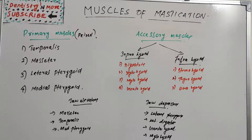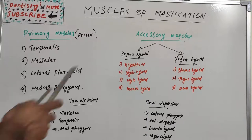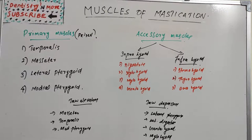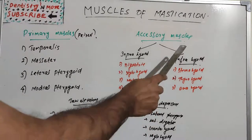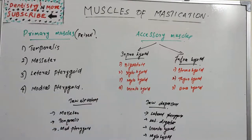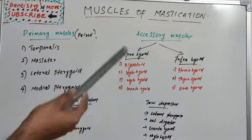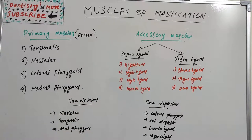We have four pairs of muscles in the mandible which make chewing movement possible. These muscles, along with accessory muscles, are together known as muscles of mastication. These muscles also have roles in prosthetic dentistry, defining the borders and peripheral extensions of dentures. The primary muscles are temporalis, masseter, lateral pterygoid, and medial pterygoid. The accessory muscles are divided into suprahyoid muscles — above the hyoid bone — and infrahyoid muscles — below the hyoid bone. The suprahyoid muscles are digastric, stylohyoid, mylohyoid, and geniohyoid.